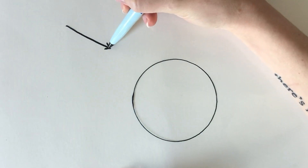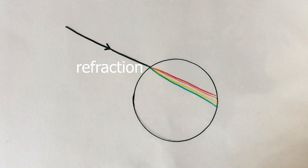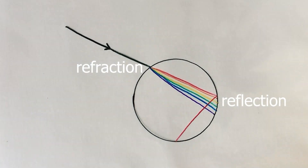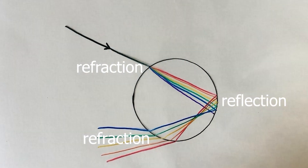Now imagine this object is spherical. There is a ton of reflection and refraction happening when light hits a transparent sphere. It hits the sphere, refracts into it, reflects off the other side, and refracts back out again. But what's happening with all of those different colors?